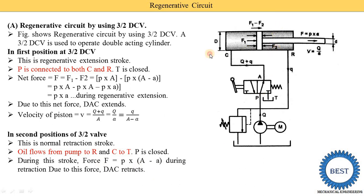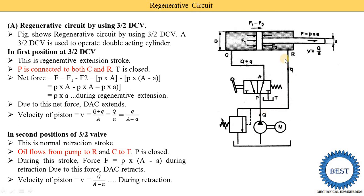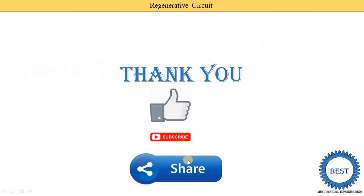The cylinder retracts — moving from right to left. The velocity of the piston during retraction is V equals capital Q divided by (capital A minus small a), because capital Q from the pump is directly supplied to the rod end port, and the effective area on the rod side is (A − a). This is the normal retraction stroke. Thank you for watching this video. If you learned something, please like the video, subscribe to my channel, and share with your friends.